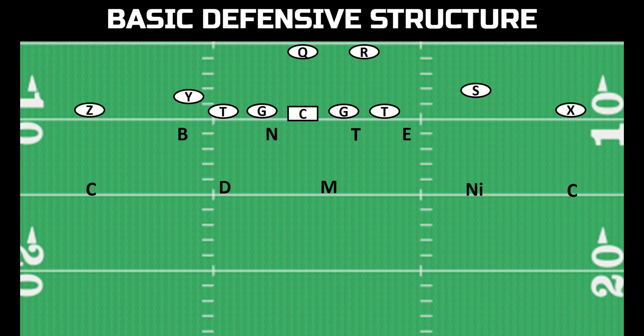What we're looking at is basic defensive structure against a simple 2x2 formation. If you want to see what each position is and why they're labeled like this, you can check out this video. But for now, we're really focused on the safeties. In any given play, there are two types of categories of coverage.